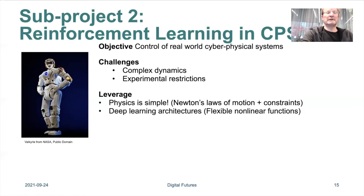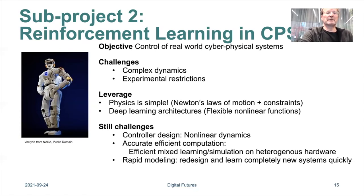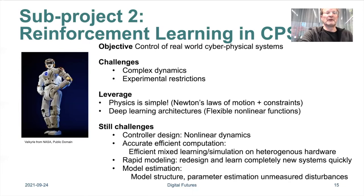We have very agile architectures today that we can use for control. Still, there are challenges: we have non-linear dynamics, we need efficient computations, and especially we need to combine CPUs and GPUs in an efficient way. We also need a procedure that works for any system basically, so we shouldn't have to redo the project for a new system. Model estimation itself can also be challenging, especially when you have unmeasured disturbances.